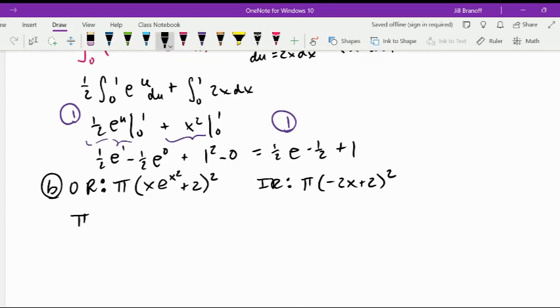We have to write the integral. I always pull my pi out in front. We're integrating from our smallest to our biggest x, so from 0 to 1, and then outer x e to the x squared plus 2 quantity squared minus the inner negative 2x plus 2 quantity squared dx. That's all you want to do on that.